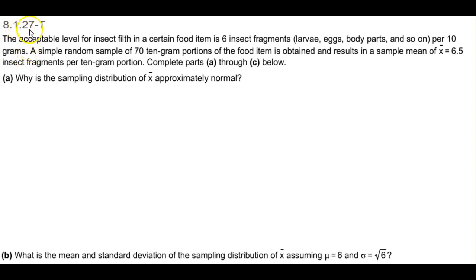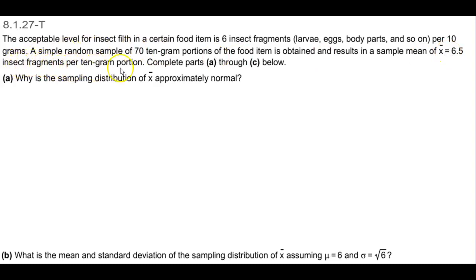Section 8.1.27-T, using technology. The acceptable level for insect filth in a certain food item is six insect fragments — larvae, eggs, body parts, and so on — per 10 grams. A simple random sample of 70 10-gram portions of the food item is obtained and results in a sample mean of x-bar equal to 6.5 insect fragments per 10-gram portion.